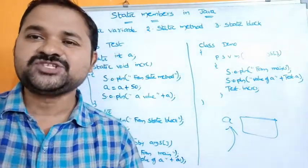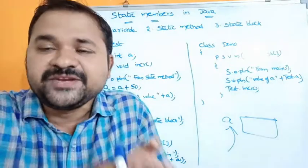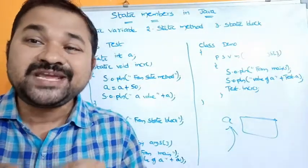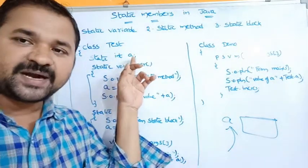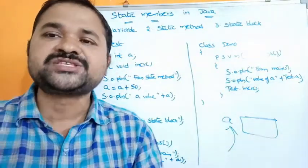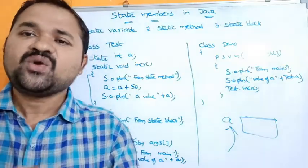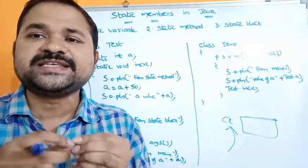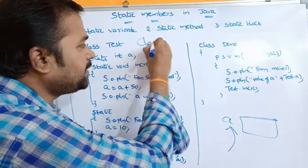Static variables are nothing but global variables, but in Java we don't have global variables, so in place of a global variable we use a static variable. If you want to maintain common information for all the objects of the class, then we can go for a static variable. The default initial value for a static variable is zero. Static variables are associated with the class, so to access them we use the syntax: class name dot variable name.